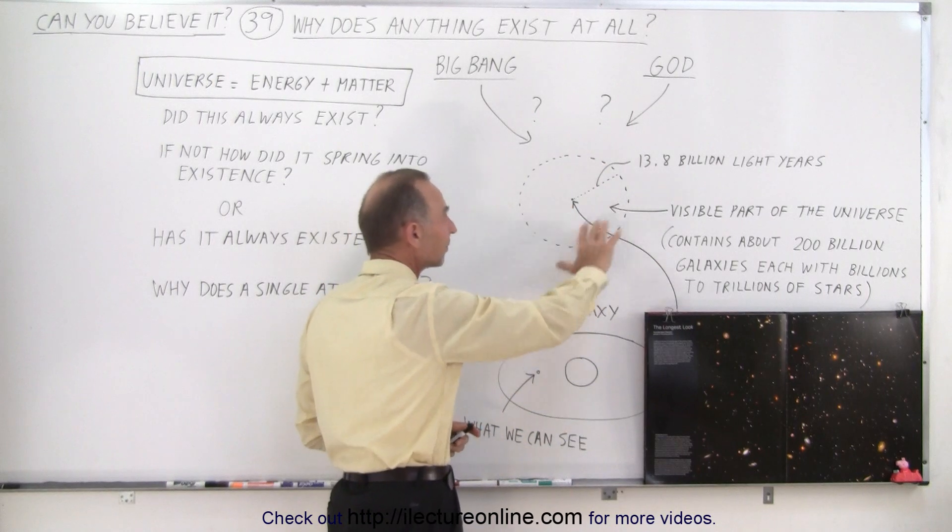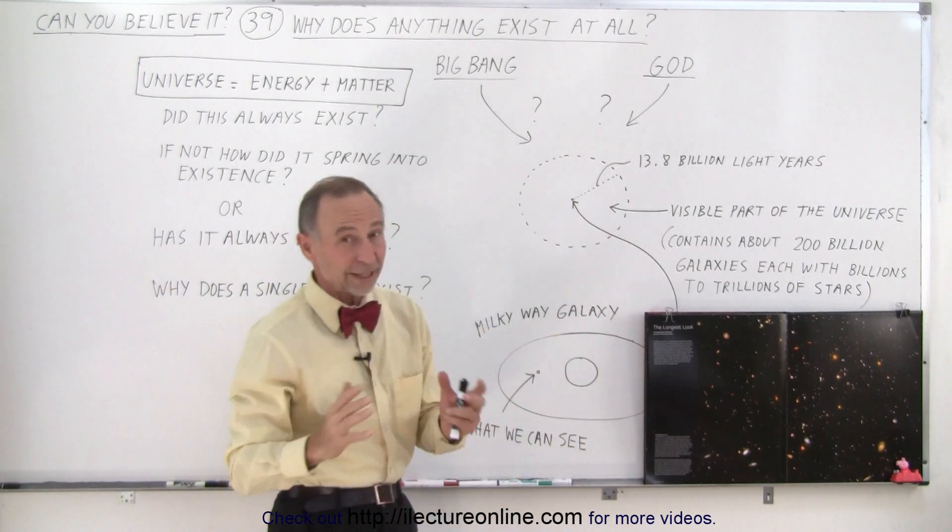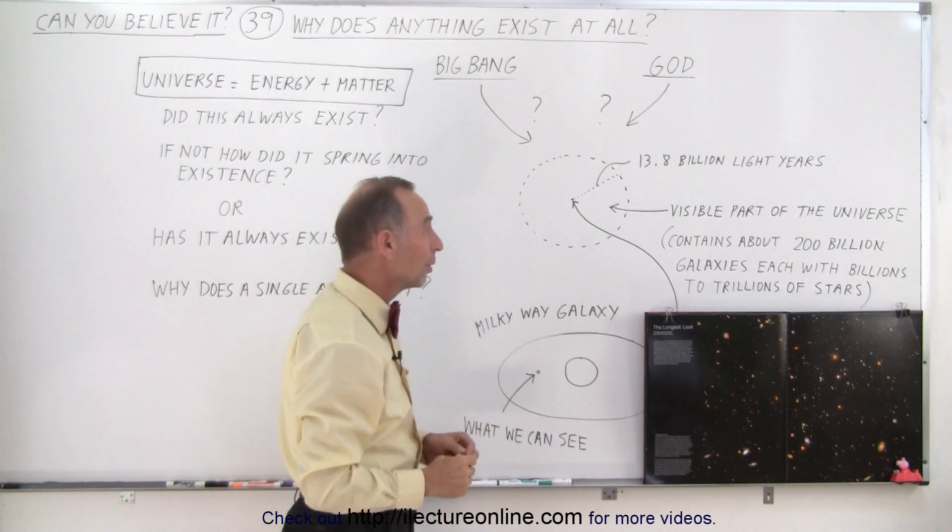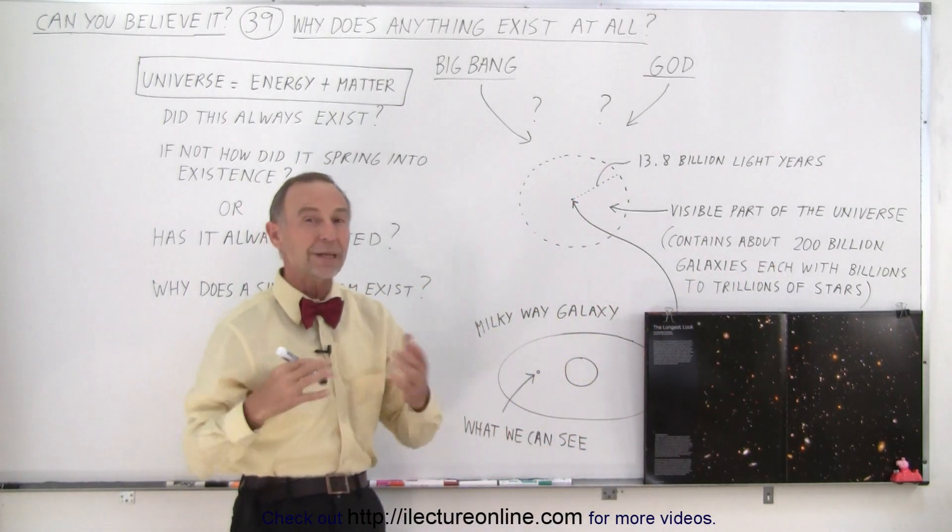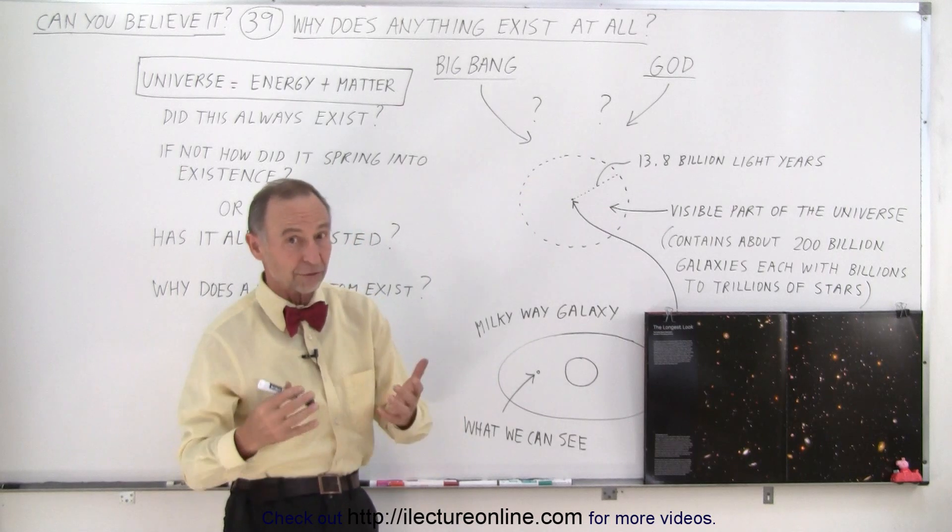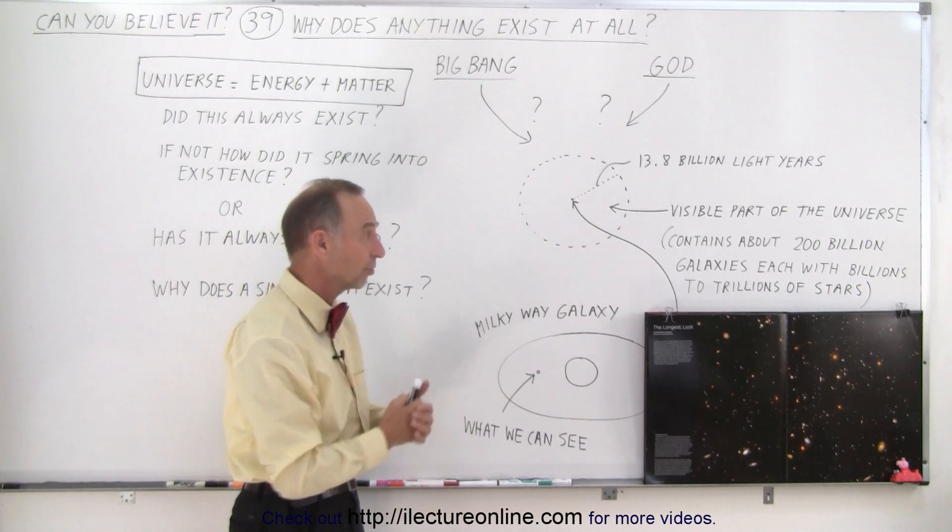And so if we look around us, not with the naked eye, but with a telescope, we can see that there's about 200 billion galaxies, each of them with billions to trillions of stars, especially for the big galaxies.